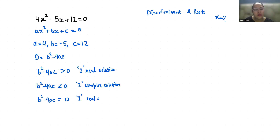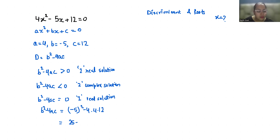Let's find out: b² minus 4ac — b is minus 5, so minus 5 squared minus 4 times 4 times 12. Minus 5 squared is 25, minus 4 times 4 is 16, and 16 times 12 is 192. So 25 minus 192 equals minus 167. Since it is less than 0, two complex solutions exist for this equation.